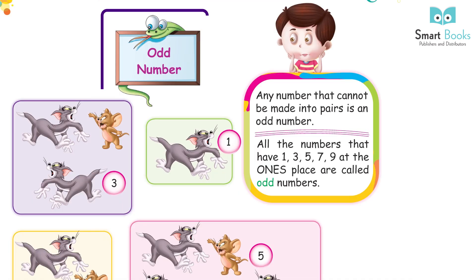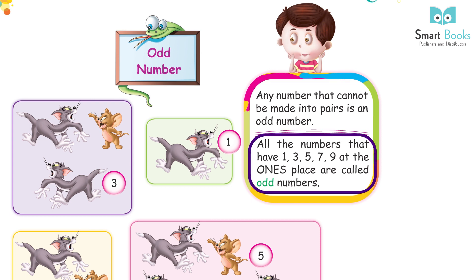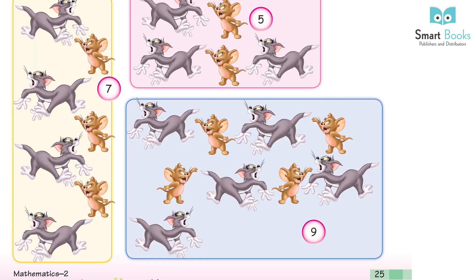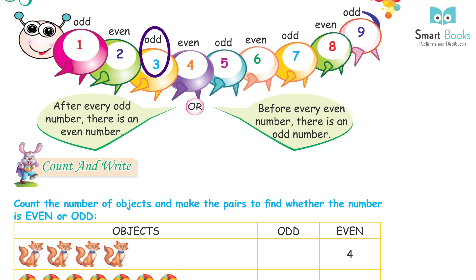Odd numbers: any number that cannot be made into a pair is an odd number. All numbers that have one, three, five, seven, or nine at the ones place are called odd numbers.